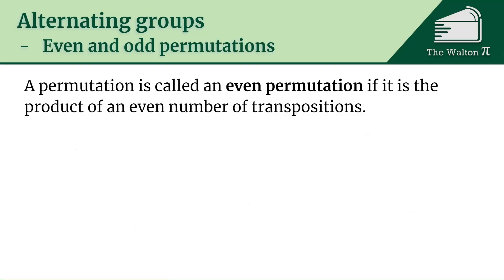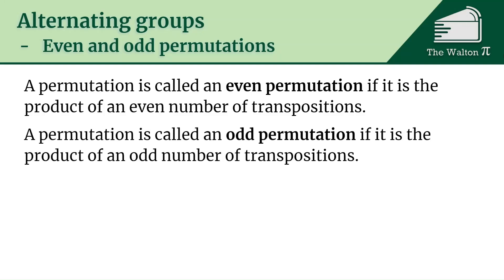A permutation is called an even permutation if it is the product of an even number of transpositions, and if it's the product of an odd number of transpositions we say it's an odd permutation.